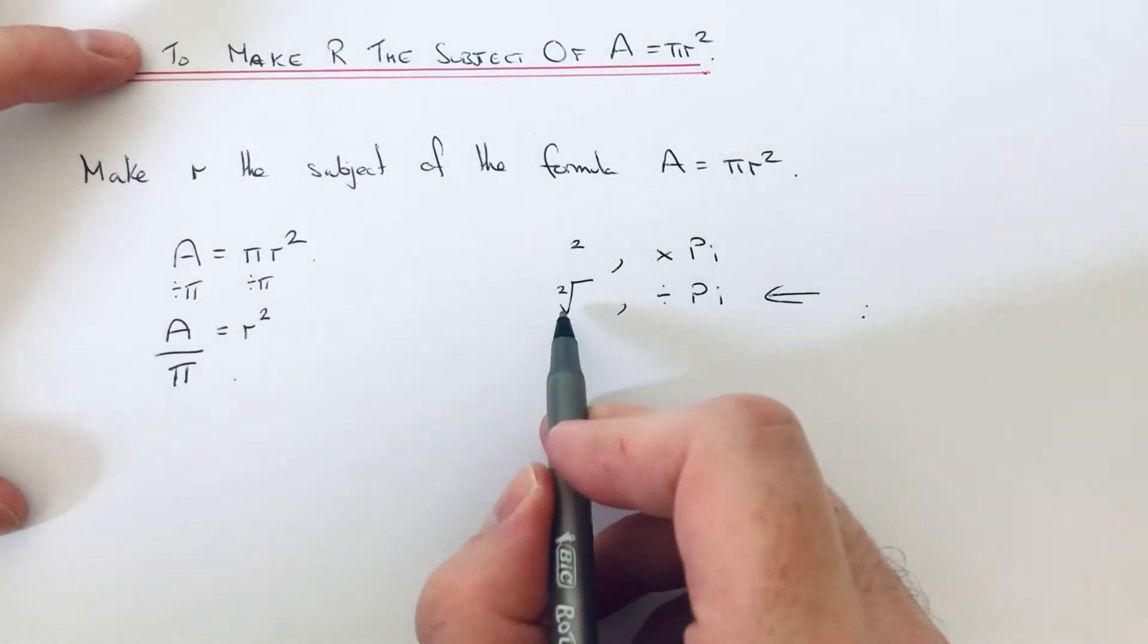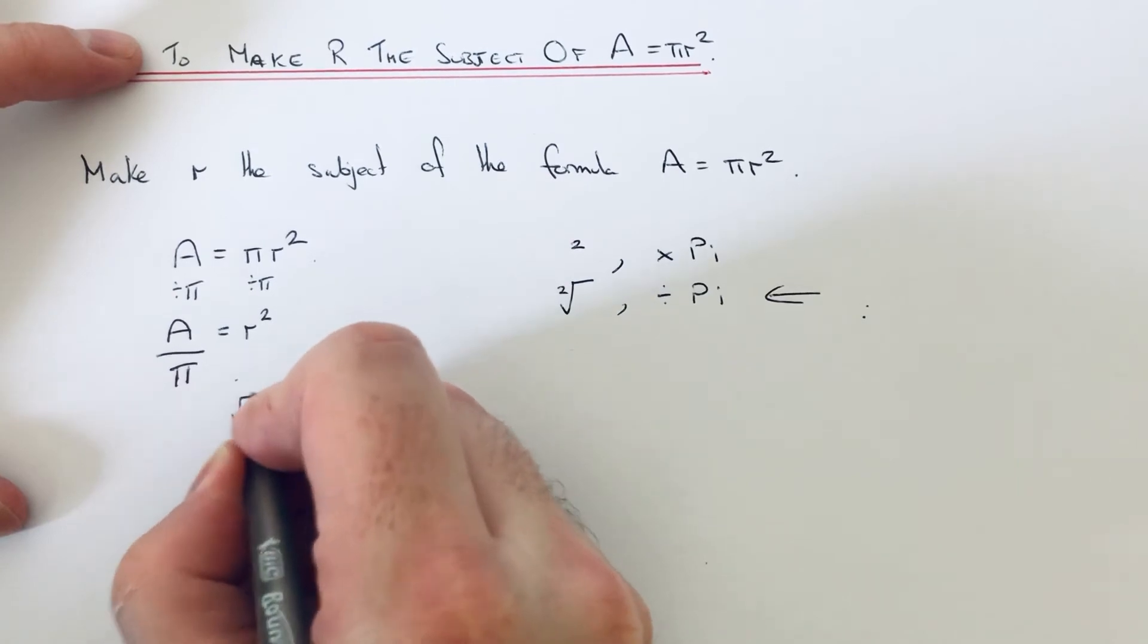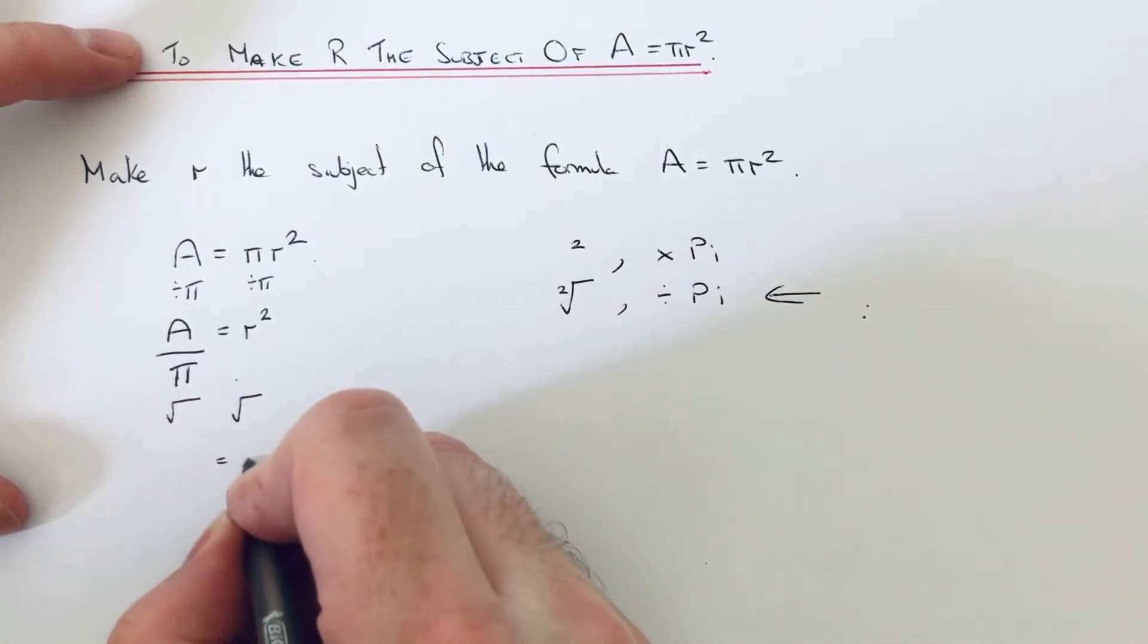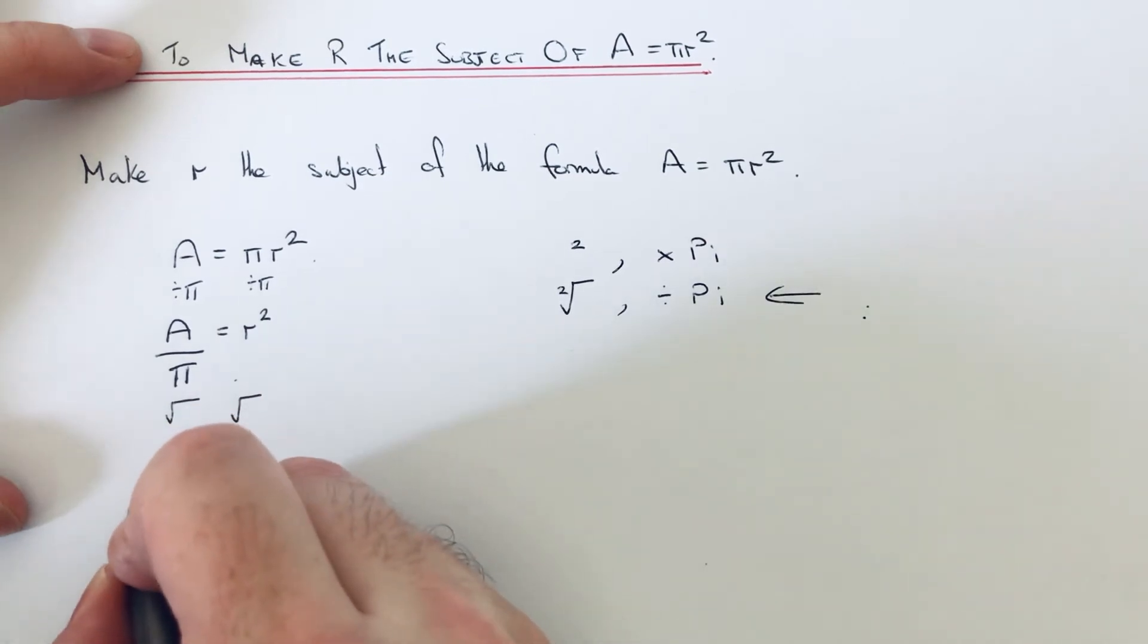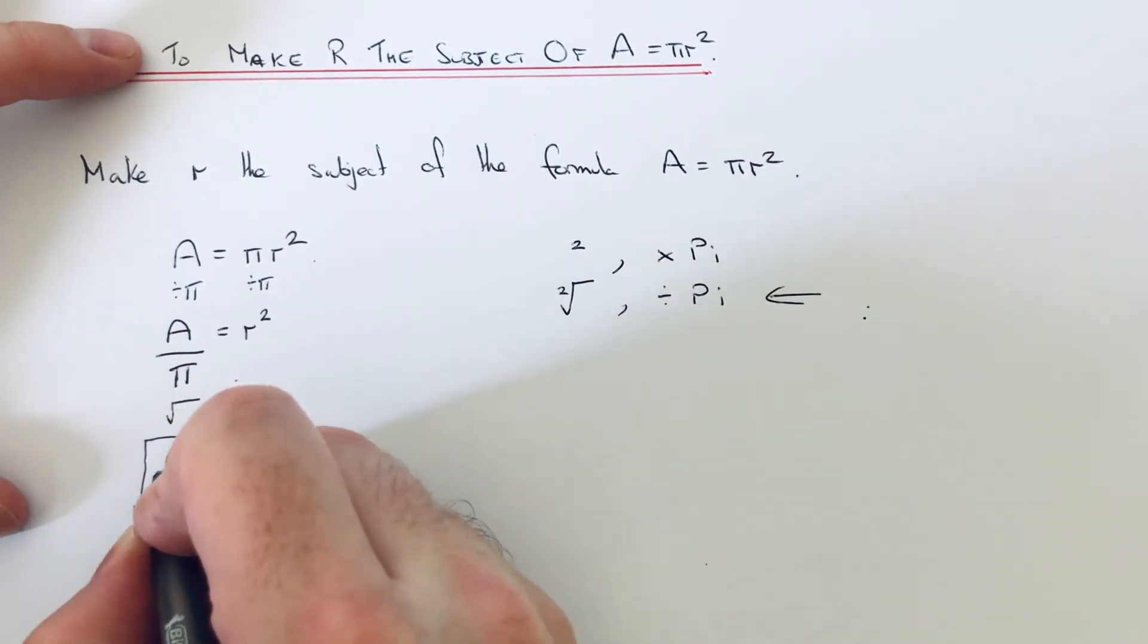And then the next inverse is to square root our answer to get rid of the square. So we square root both sides, so that will leave us with R on the right hand side. And then we just need to put a big square root sign over A over pi.